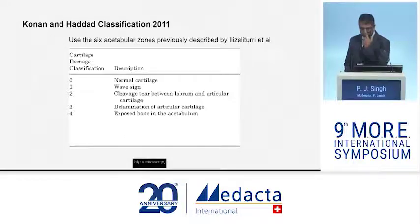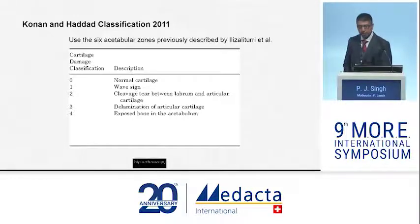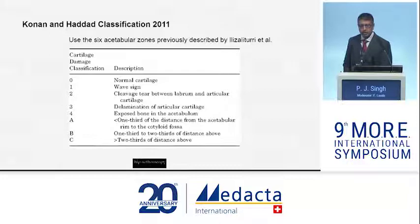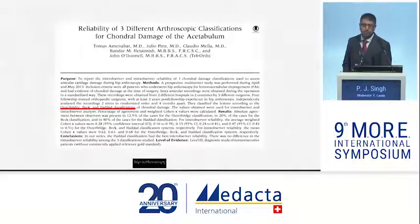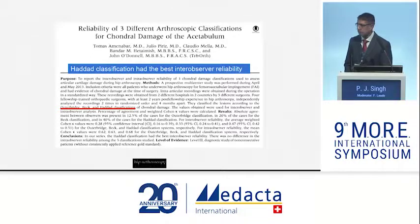Conan and Haddad in London felt improvements could be made to the classification. Their system incorporated elements from Elisori and Martin Beck's classification, and added the extent of damage — defining cartilage delamination as less than a third, one third to two thirds, or greater than two thirds, measured from the chondrolabral junction to the cartilaginous fossa. John O'Donnell concluded that the Haddad classification has the best inter-observer reliability.